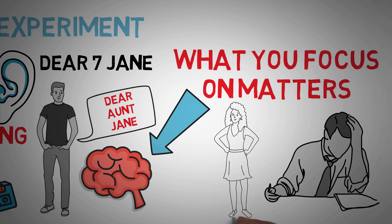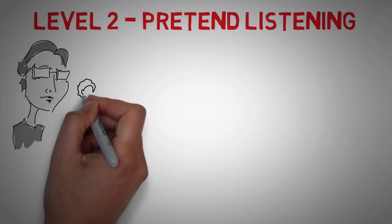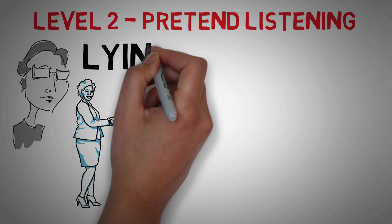Next, level two is called pretend listening. And this is when you hear them, but you're still not listening. What makes this different than ignoring is that you're responding in a way that tricks the speaker into thinking that you're understanding what they're saying. In fact, you're actually lying to them.